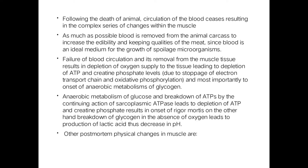Following death, circulation of blood ceases, resulting in a complex series of changes within the muscles. As much blood as possible is removed from the animal carcass to increase the edibility and keeping quality of meat, since blood is an ideal medium for growth of spoilage microorganisms. If blood remains, it leads to early spoilage and reduced palatability and eating quality of the meat.